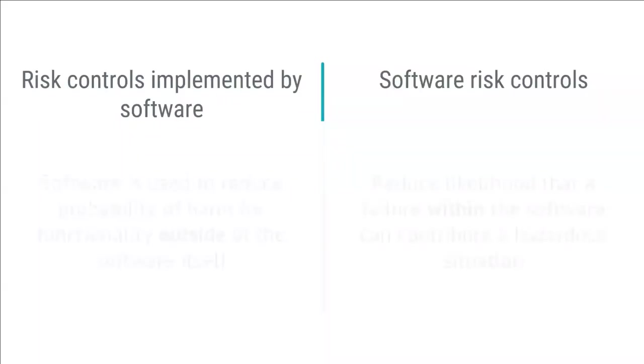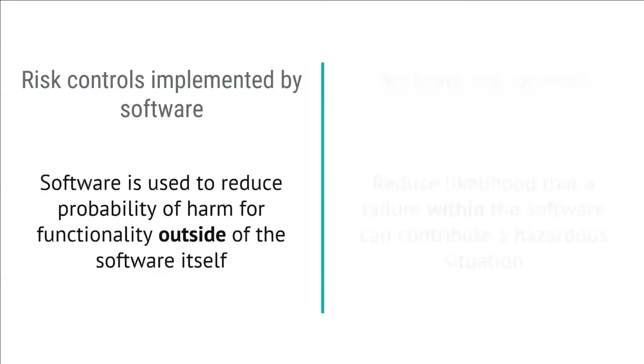Let's clear up the confusion. The wordings are similar but the meaning is quite different. A risk control implemented by software is when the software is used to reduce the probability of harm for functionality outside the software itself. For example, the goods coming out of a steam sterilizer are very hot. To minimize the risk of burns, the software can prompt a warning on a user interface. This is a risk control measure, but it is not a software risk control measure — the software implements a functionality which happens to be a risk control, but it's not a software risk control.